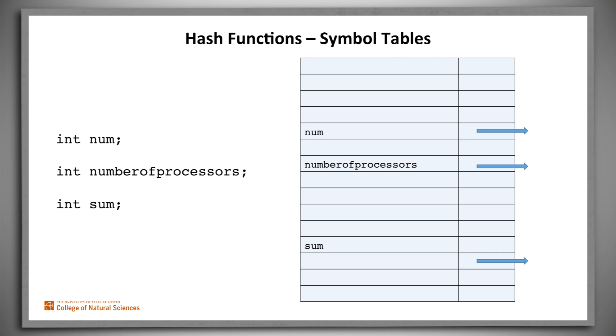Assume for the moment a simplified problem in which identifiers can contain only the 26 letters of the alphabet. Well, then we could reserve one row in the table for every legal identifier, assuming that there's a maximum length. But then most rows would be empty, as you can see here. We don't want to waste that much space.